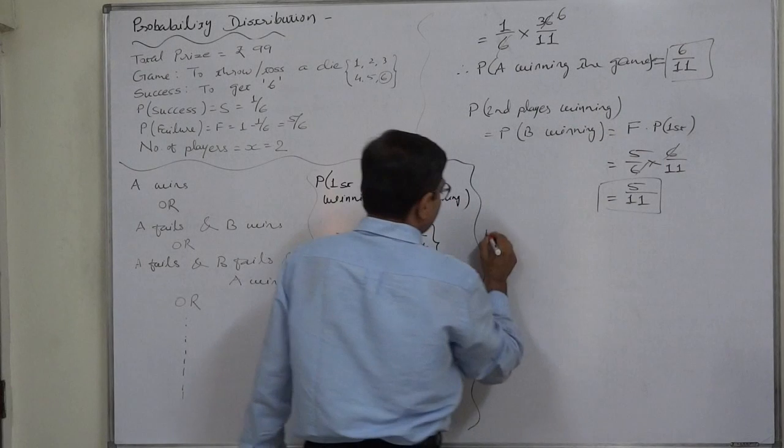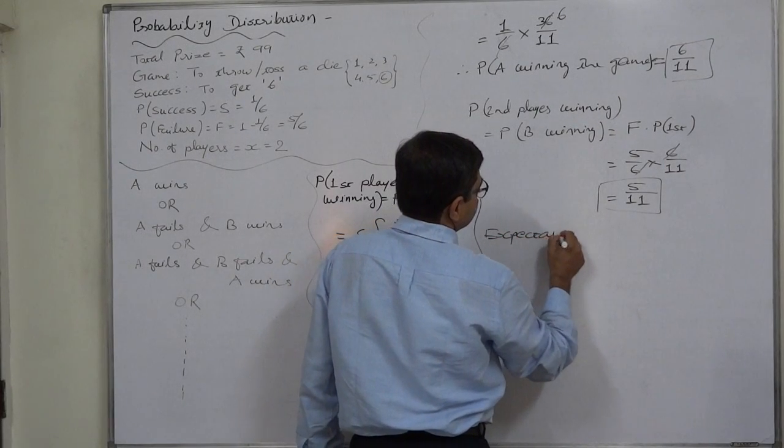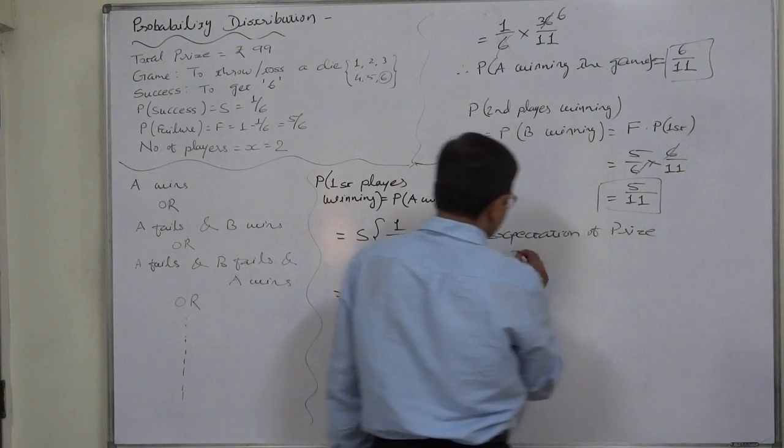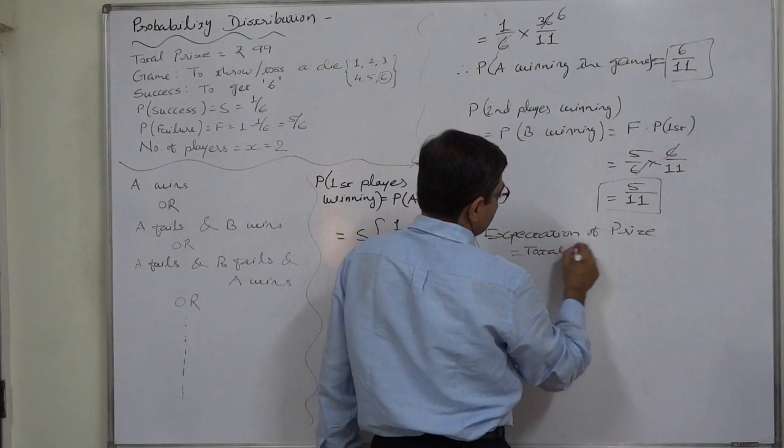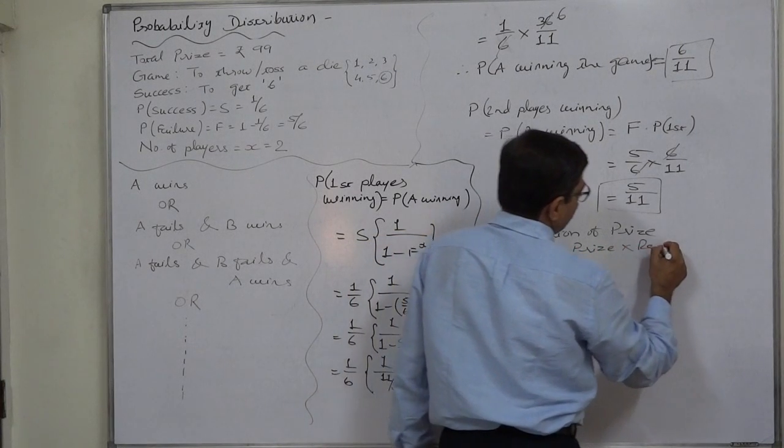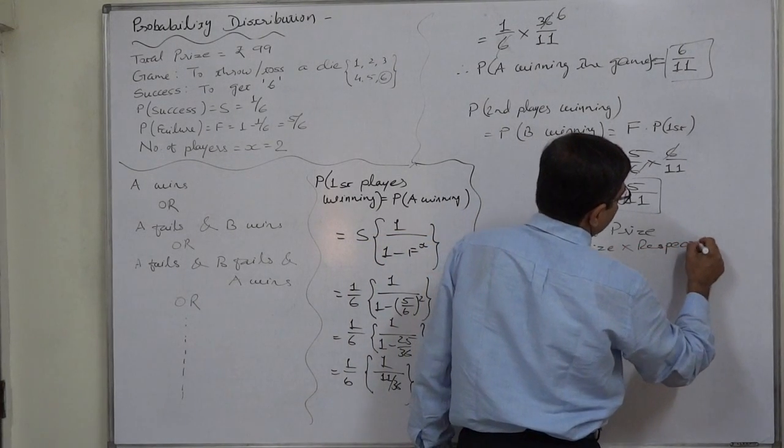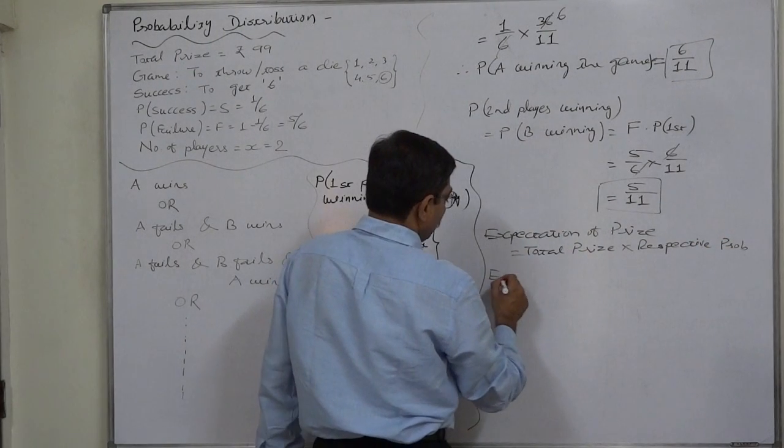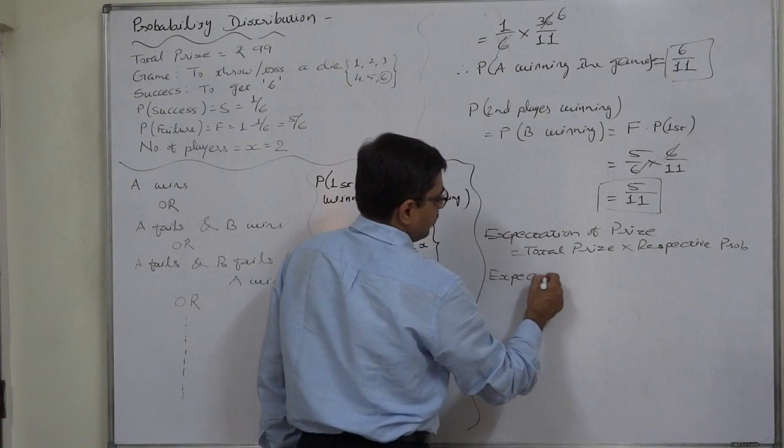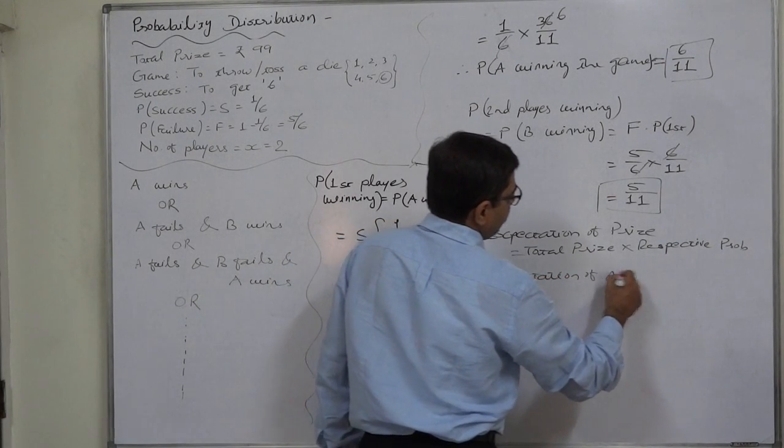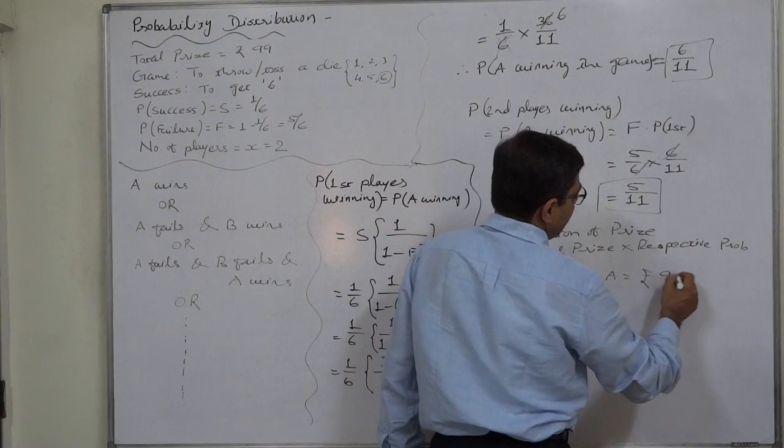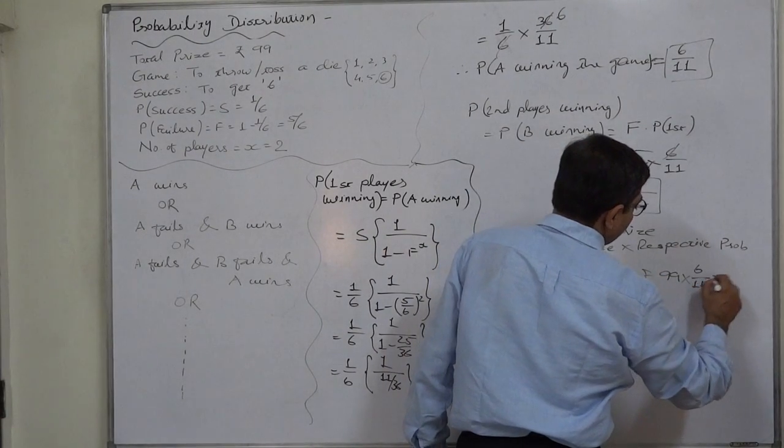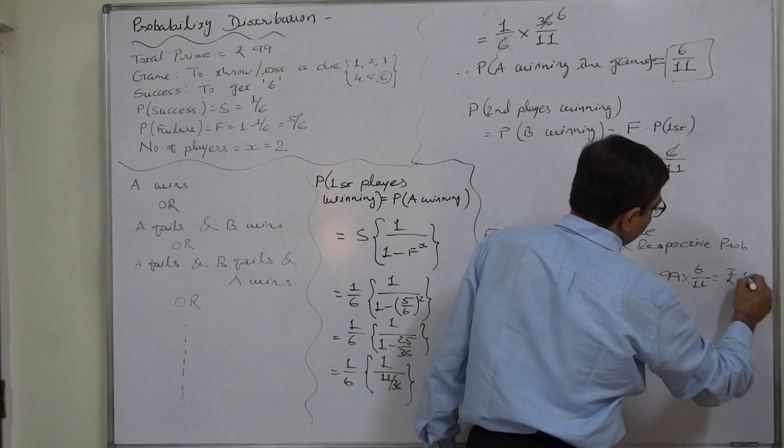So expectation of price is equivalent to total price into respective probability. So expectation of A will be Rs. 99 into probability of A winning the game, 6 by 11, that is Rs. 54.